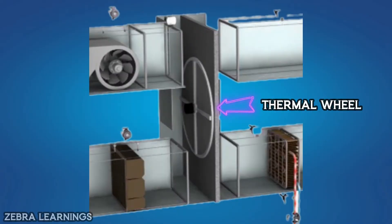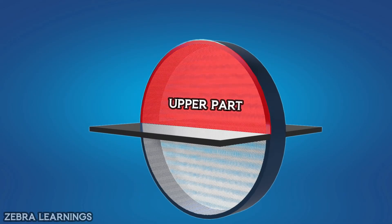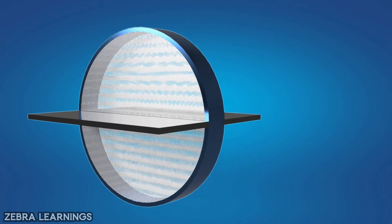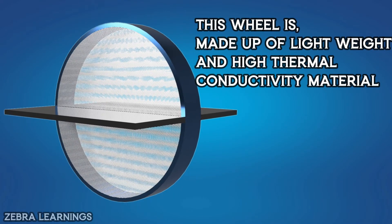The thermal wheel is in the center of the FAHU. One half of it is in the upper part and the other half is in the lower part. This wheel is made up of lightweight, high thermal conductivity materials like aluminum.